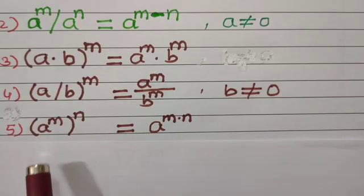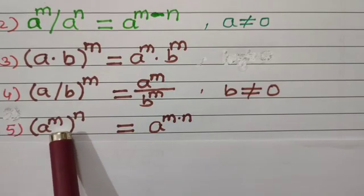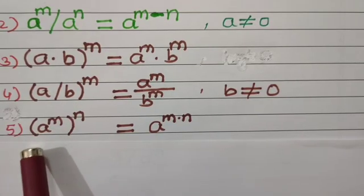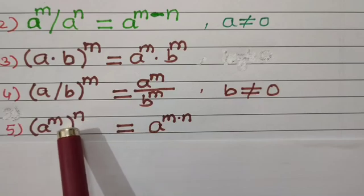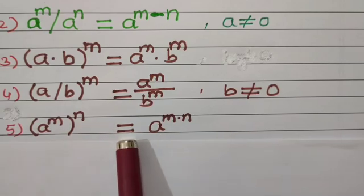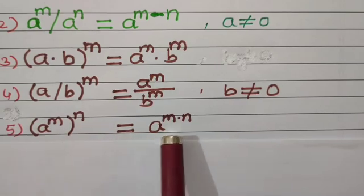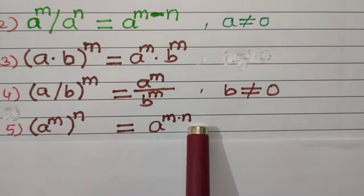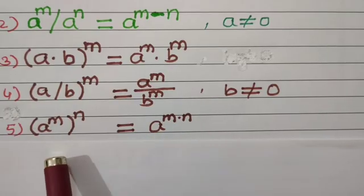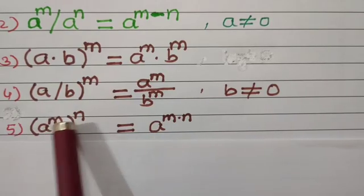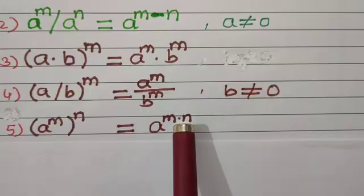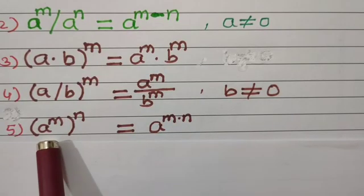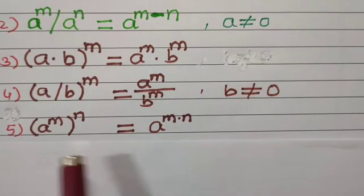Property number 5: (a to the power m) to the power n is equal to a to the power m into n. The meaning of this is power of a power, which is nothing but multiplication of the powers, keeping the base a as it is.